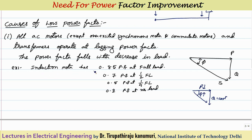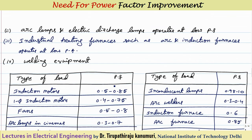That is why an induction motor under full load operates at nearly 0.85 power factor. At half load, reactive power is still nearly constant but active power is halved, so the power factor decreases further. At one-quarter load it may be around 0.5, and under no load the power factor may drop as low as 0.2. Similarly, arc lamps and electric discharge lamps used in street lighting, as well as industrial heating furnaces such as arc and induction furnaces, and electric welding equipment — which are essentially welding transformers — all operate at low power factor.